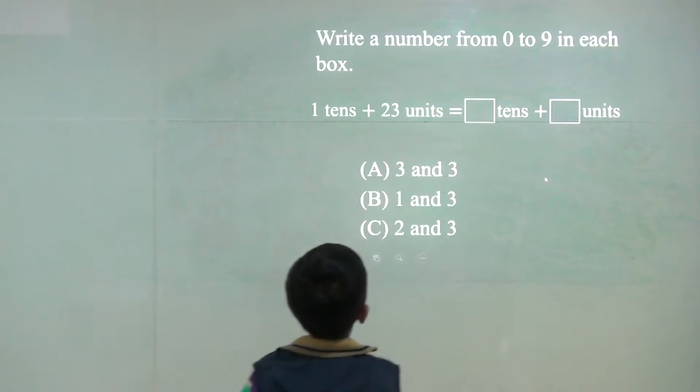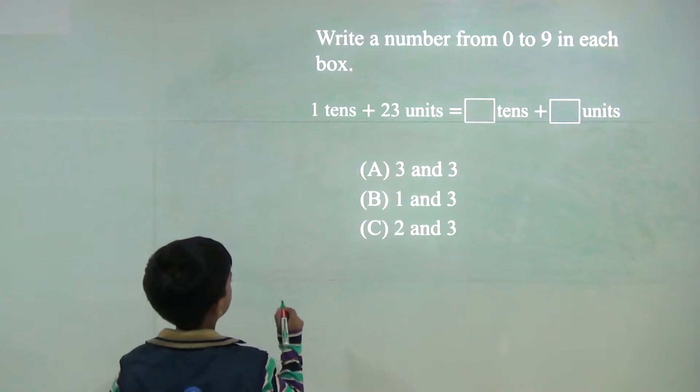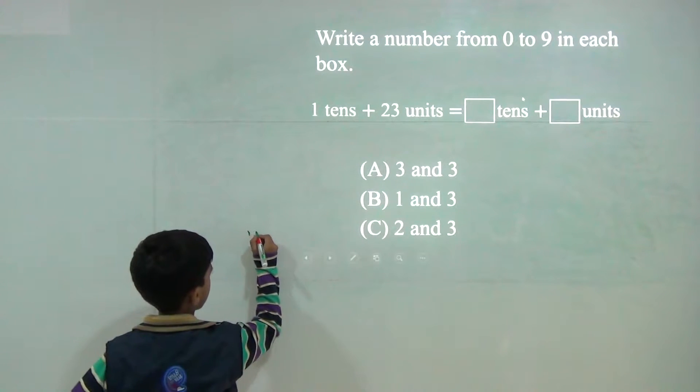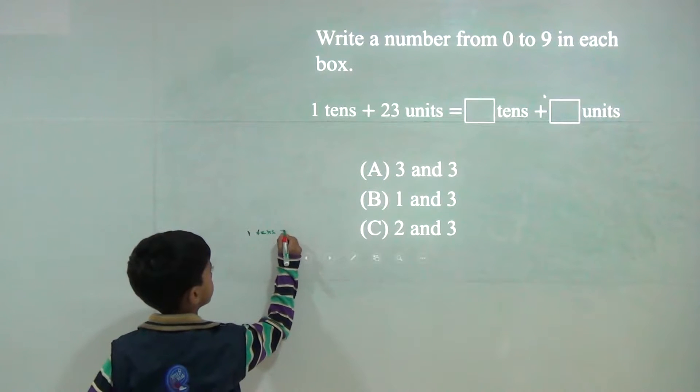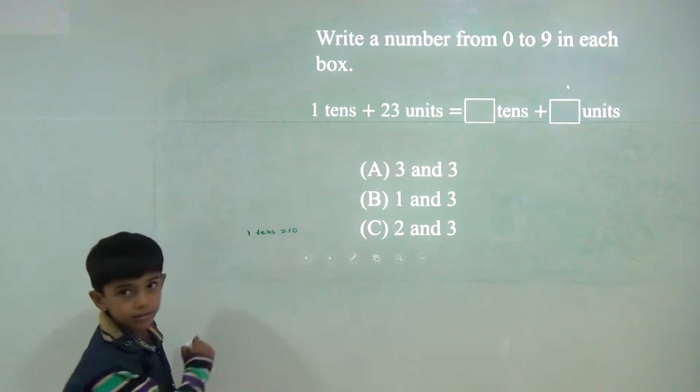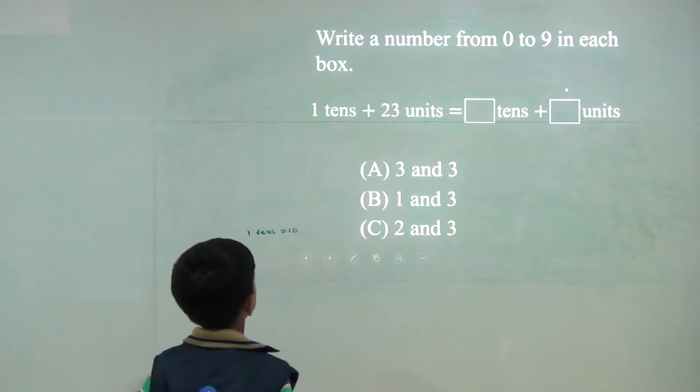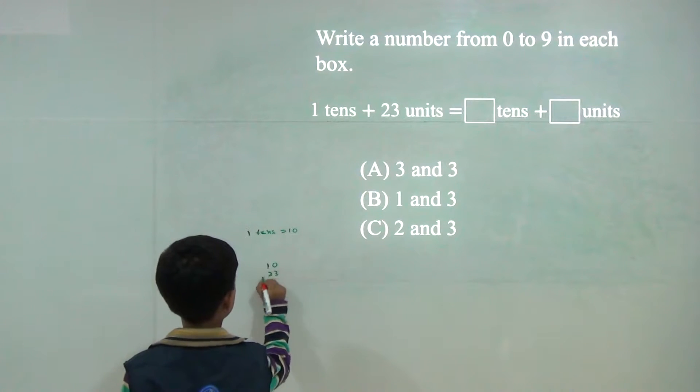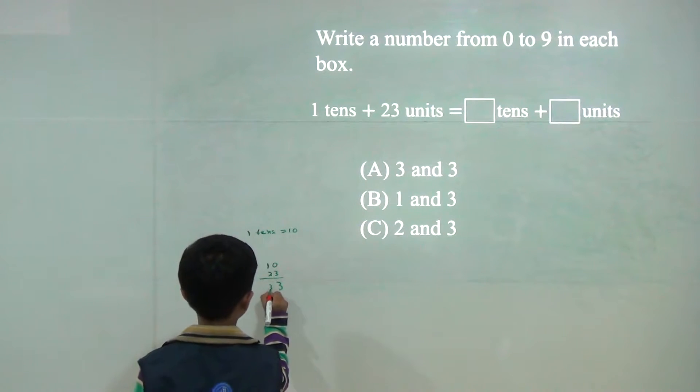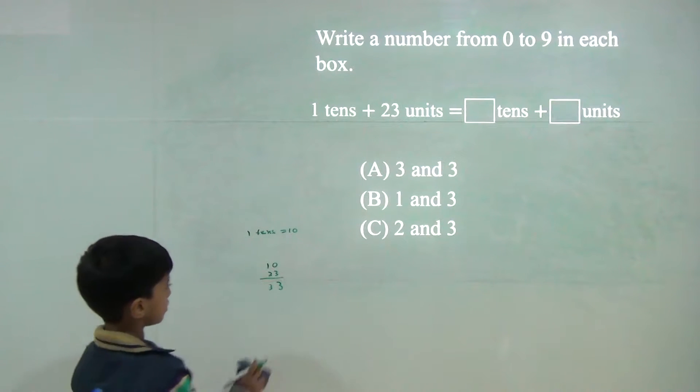Now 1 ten is equal to 10. So 1 tens is 10 plus 23. So 0 plus 3 would be 3 and 1 plus 2 would be 3. So answer would be 33.